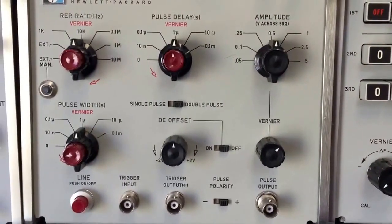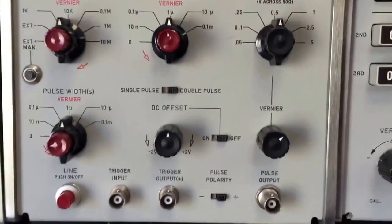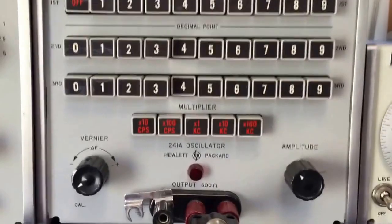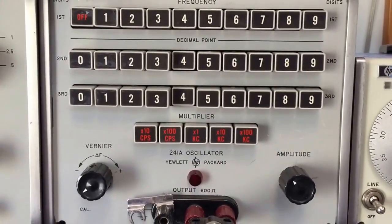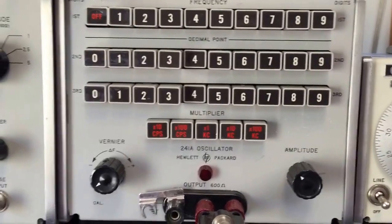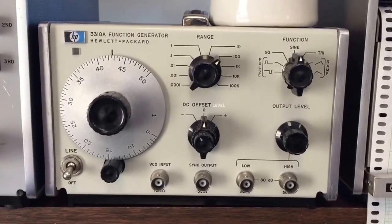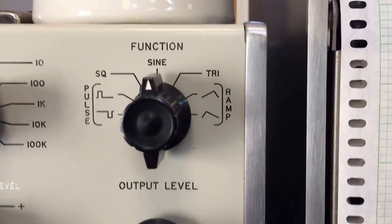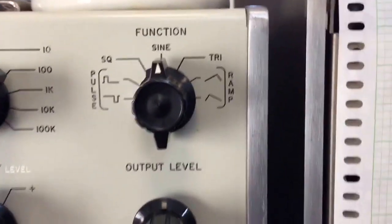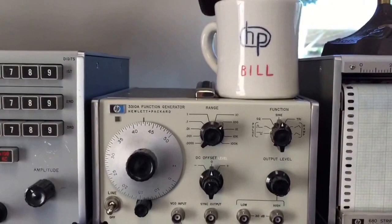There's another pulse generator, similar to the other one but does some different things, different frequency range. There's a push button oscillator with sort of digital controls in the old days. Here's a function generator - takes the place of many of these with different functions: triangle wave, square wave, ramp, pulse, and sine wave. Very small little envelope.